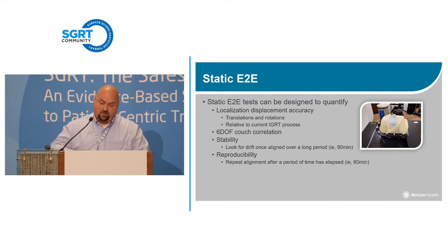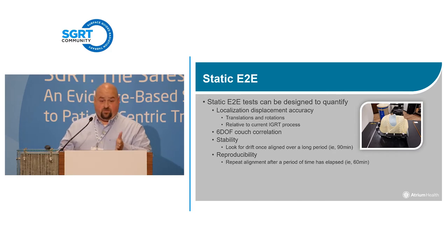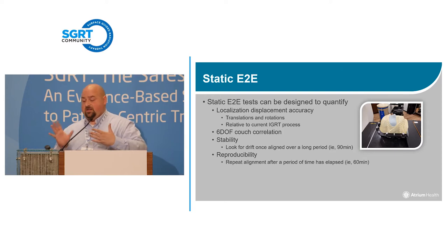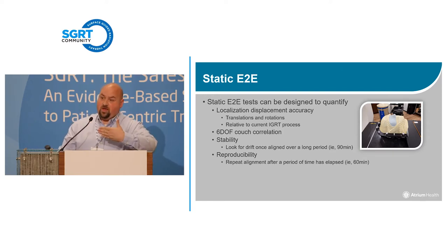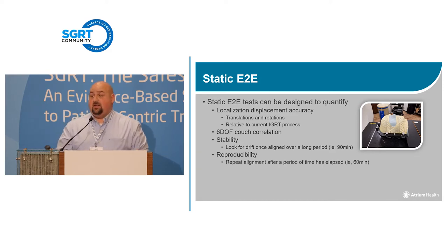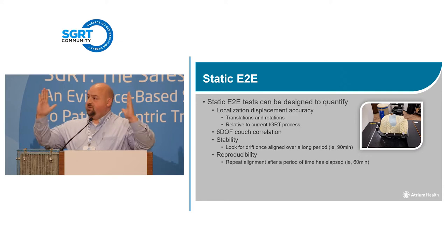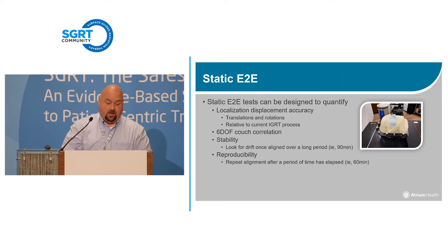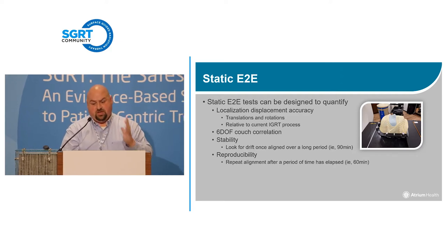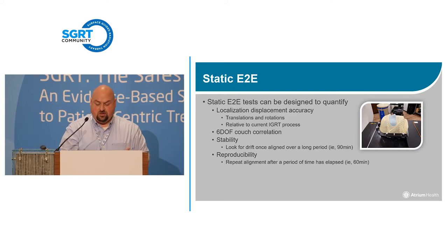For static testing we used the Max HD head phantom and a compass mask — we treated it exactly like a patient. We don't have advanced calibration right now, so we do see a little walk. That showed us our SRS cases have a 1.1 mm walk. That's a known issue and we could only correlate that because we had an end-to-end test. You can test position stability, look at drift, keep cameras on for an hour, and see what happens — all satisfying many TG-147 recommendations.